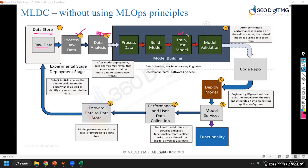For building the model we implement the split strategy, evaluate it, validate it, refine it and all that. Once the benchmarks are reached with respect to accuracy, we put that in a code repository — it could be GitHub or a similar code repository software — where your data and code is stored.